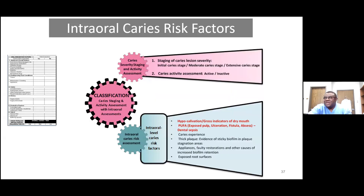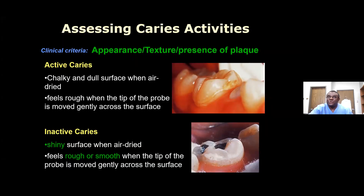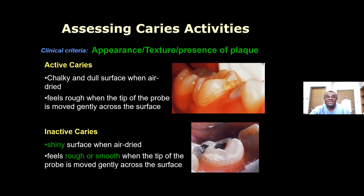After categorizing the caries, you go back to the early caries and decide the activity status — whether they are active or inactive. It is only the active ones that need to be treated by remineralization. An active caries is always chalky and dull when dried, and feels rough when the explorer is moved over it. Inactive caries is always shiny when dried, but can be rough or smooth depending on how long it has been in the mouth — if long-standing, mastication and tongue movement will smooth it, but it will remain shiny, indicating inactivity.